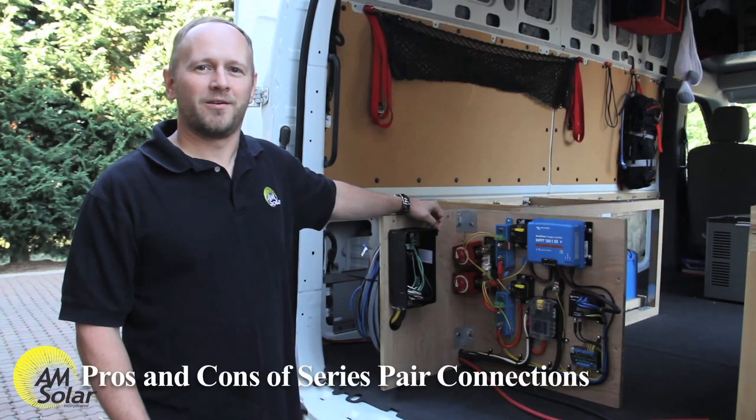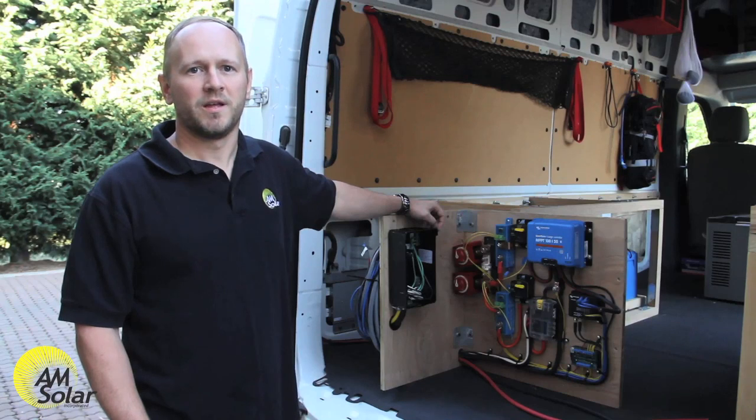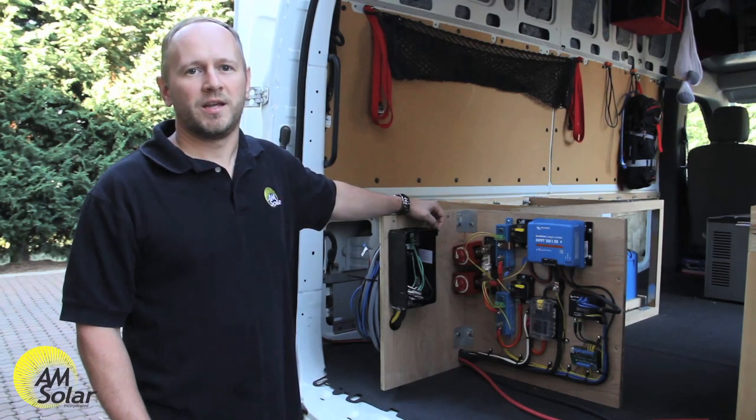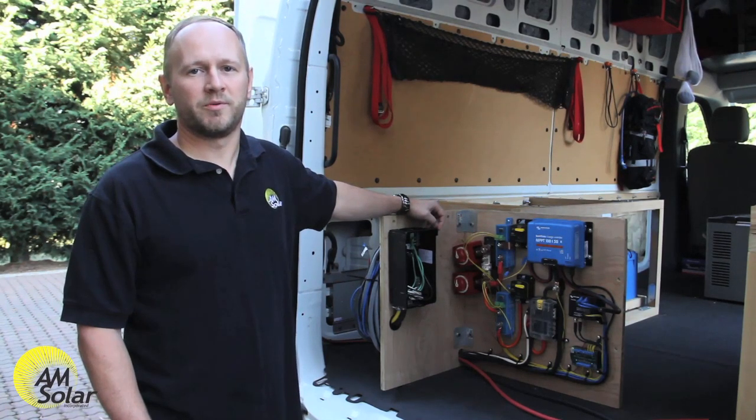Series pairs allow undersized cables to be used and basically have the benefits of parallel connected solar arrays in terms of partial shade resilience. It gets a little complicated when one panel in a series pair is shaded and the others aren't because that will result in the half-voltage being fed to the combiner box, which brings down the performance of the other panels in the connection.